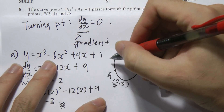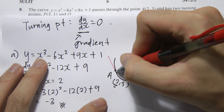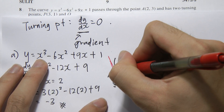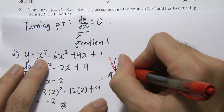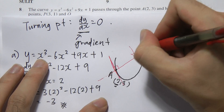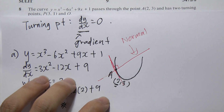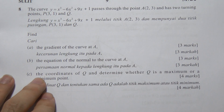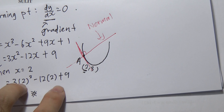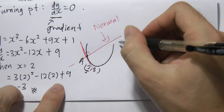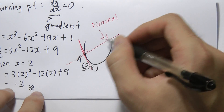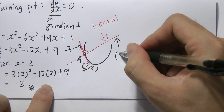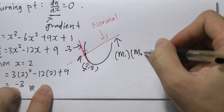The tangent line touches the curve at one point. The normal line cuts through the tangent line and forms a 90-degree angle — that is the normal line. To find its equation, we first need its gradient. We use m₁ × m₂ = -1, where the tangent gradient m₁ = -3.